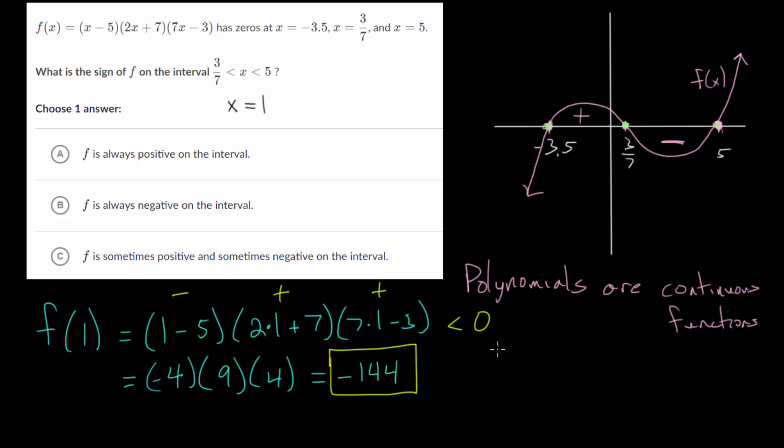But the main important point here is that we just determined that on this interval if you plug in some random value it's always going to be some negative number. If we plugged in 1 and we got a positive number that would mean that the function looks more like that and it's always going to be some positive number.